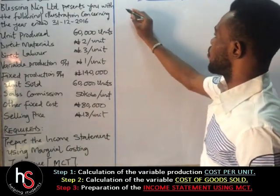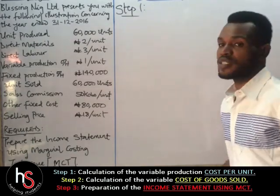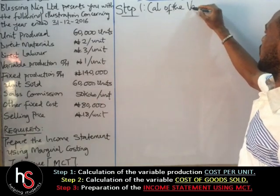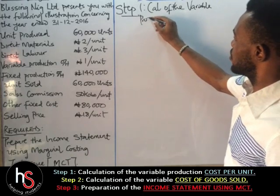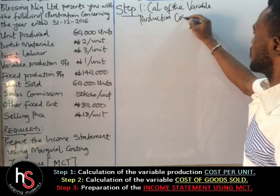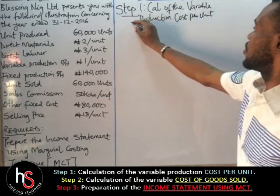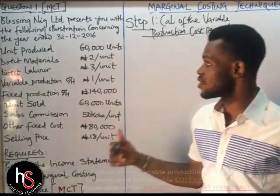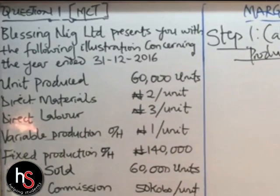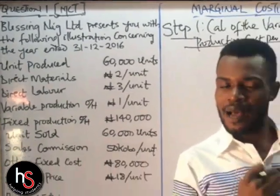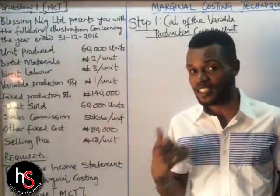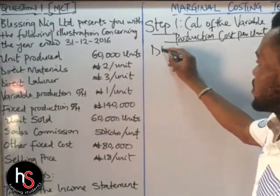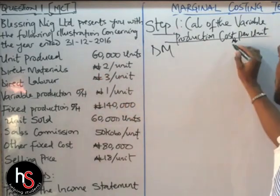Step one: the calculation of the variable production cost per unit. Under the Marginal Costing Technique, anything listed as a direct material or direct labour is regarded as a variable cost, whereas under the Absorption Costing Technique, it recognizes both the fixed cost and the variable cost. Our direct materials are a variable cost — 2 Naira per unit. Our direct labour is also a variable cost — 3 Naira per unit.